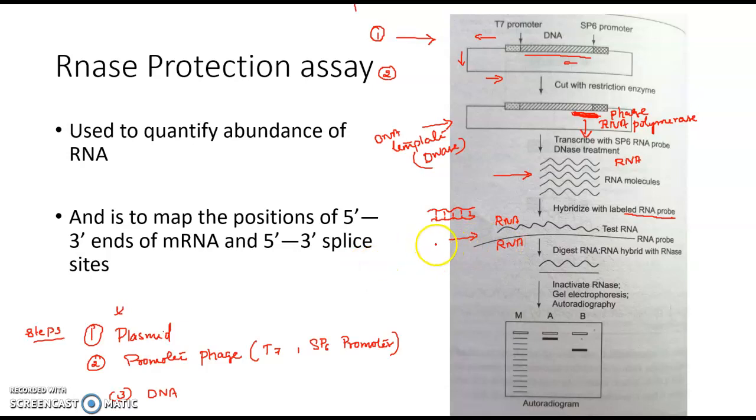Now in the next step we use RNase enzyme. So this RNase will cleave unhybridized RNA, that is single-stranded RNA. It cannot cleave double-stranded RNA. This RNase only cleaves single-stranded RNA. So due to this RNase action, unbound or unhybridized RNA will be digested.